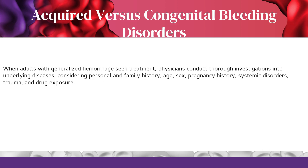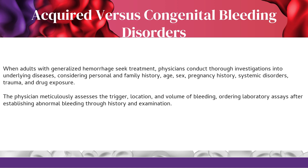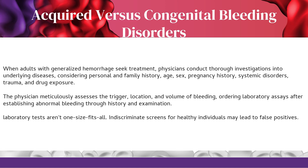When adults with generalized hemorrhage seek treatment, physicians conduct thorough investigations into underlying diseases, considering personal and family history, age, sex, pregnancy history, systemic disorders, trauma, and drug exposure. The physician meticulously assesses the trigger, location, and volume of bleeding, ordering laboratory assays after establishing abnormal bleeding through history and examination. However, laboratory tests aren't one-size-fits-all; indiscriminate screens for healthy individuals may lead to false positives.